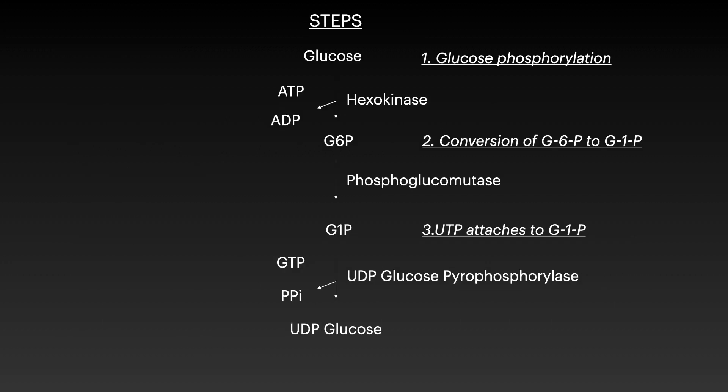Now we will see the steps of glycogenesis. First, the excess glucose is converted to glucose-6-phosphate by a simple phosphorylation reaction — the enzyme is hexokinase. The conversion of glucose-6-phosphate to glucose-1-phosphate is an isomerization reaction, so the enzyme is phosphoglucomutase, since UDP can only accept glucose-1-phosphate.